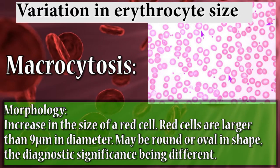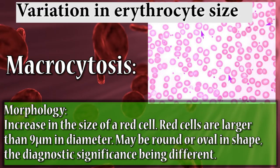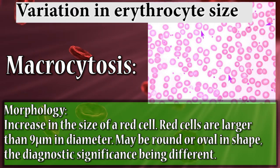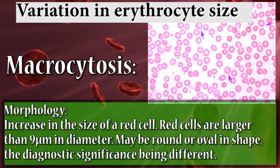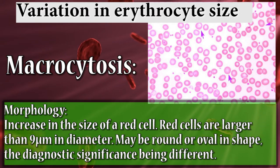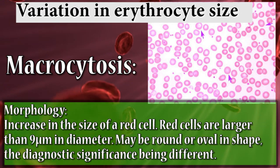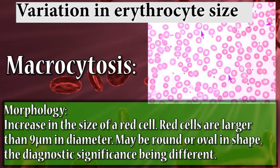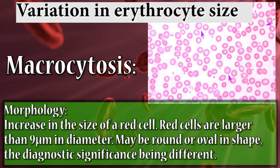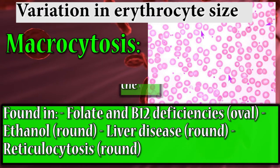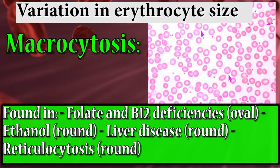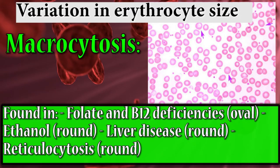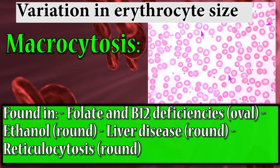The second variation in size is macrocytosis. Red cells are larger than 9 micrometers in diameter. They may be round or oval in shape, with the diagnostic significance being different. Found in folate and B12 deficiencies, ethanol, liver disease, and reticulocytosis.